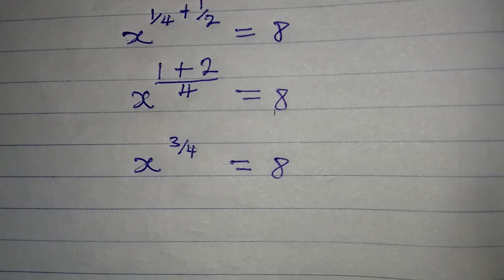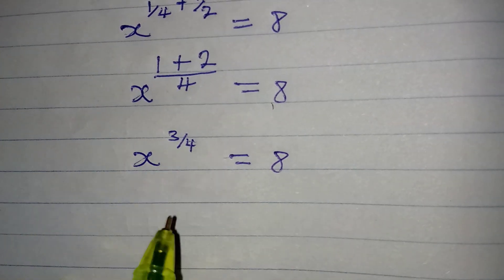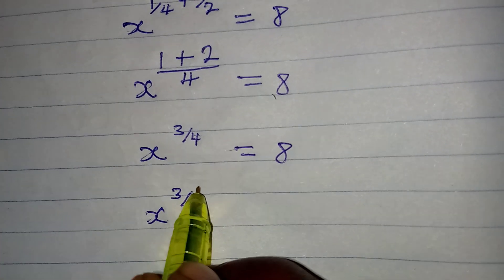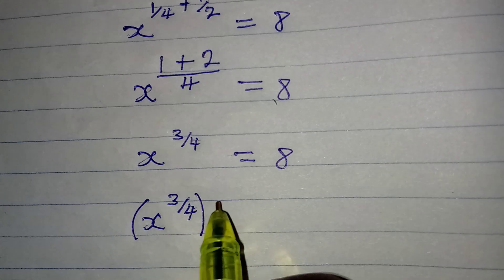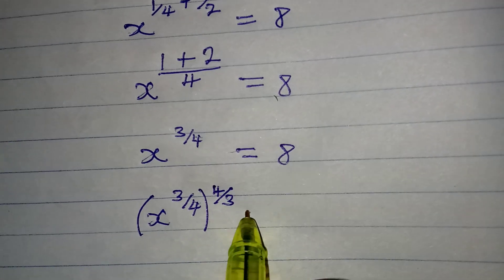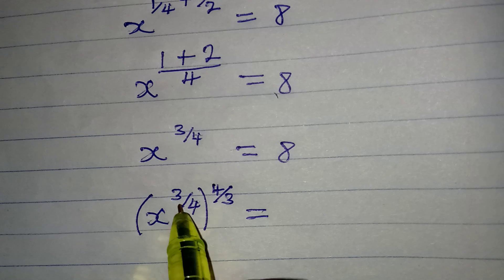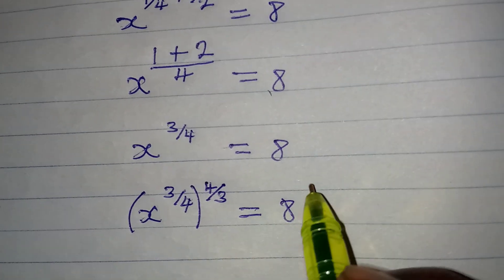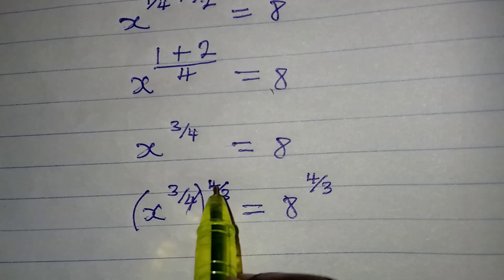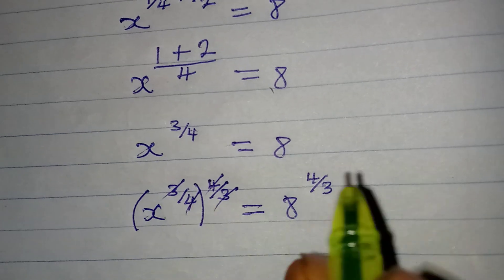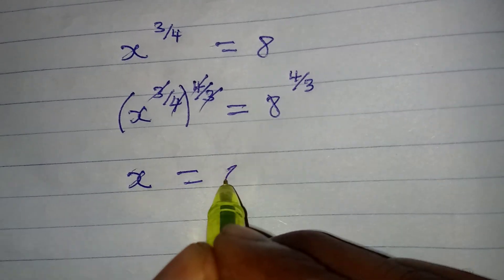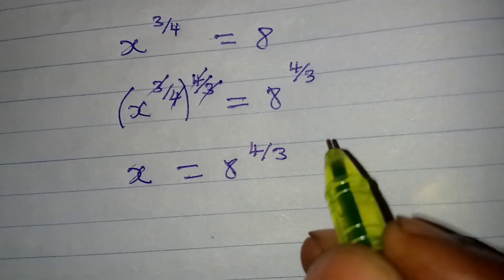Now I want to get the value of x, not x to the power of three over four. To remove this power, I multiply it by its reciprocal, which is four over three. Because I introduced the reciprocal on the left side, I also introduce it on the right side. Four cancels four and three cancels three, so we now have x equal to 8 to the power of four over three.